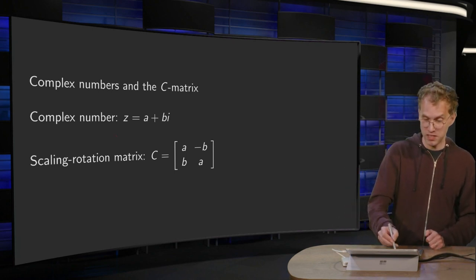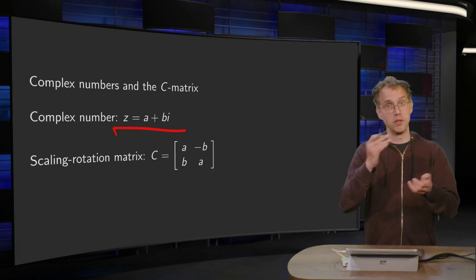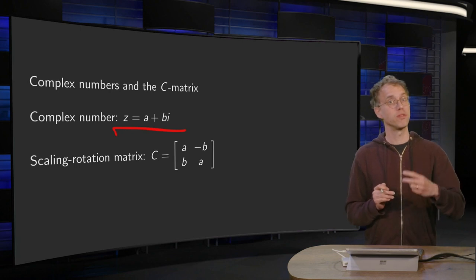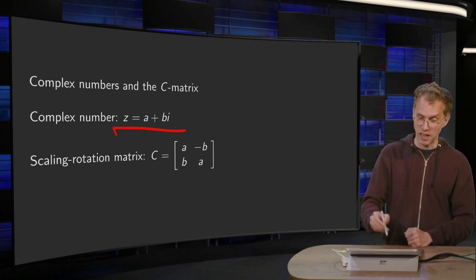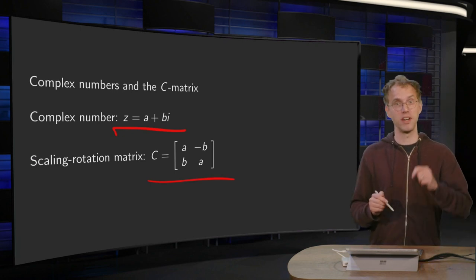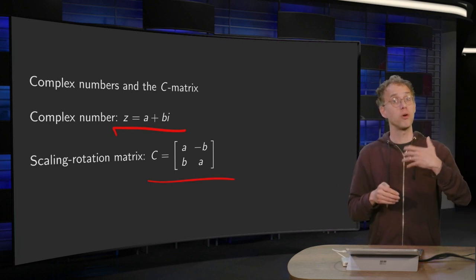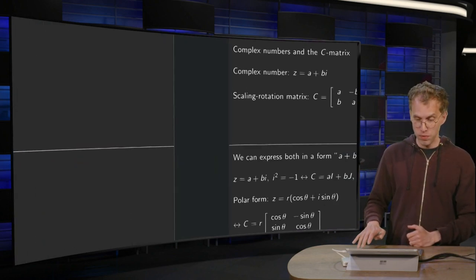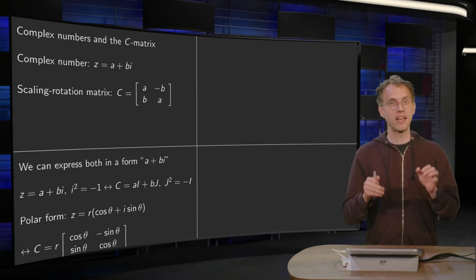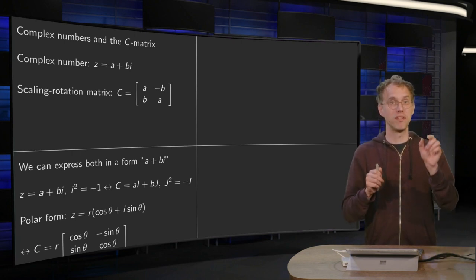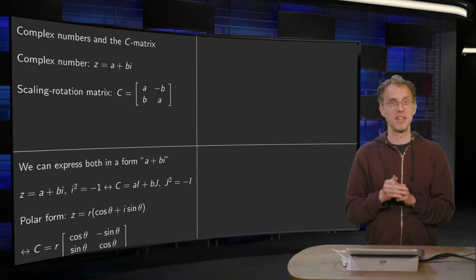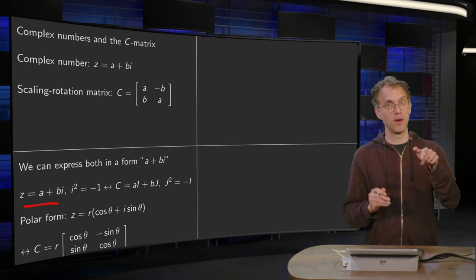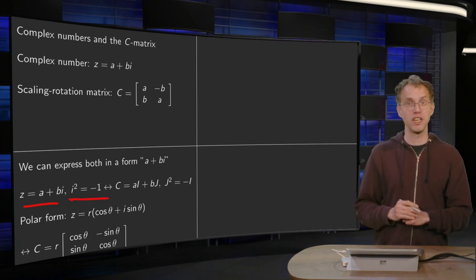A complex number z can be written as z equals a plus bi, where a is the real part and b is the imaginary part, in terms of two real numbers a and b. Both the complex number and the scaling rotation matrix can be written in the form a times 1 plus b times i. For a complex number z, this is obvious: z equals a times 1 plus b times i, where i squared equals minus 1.